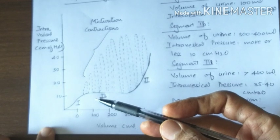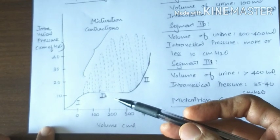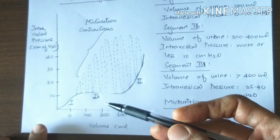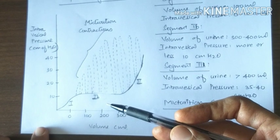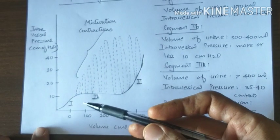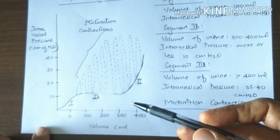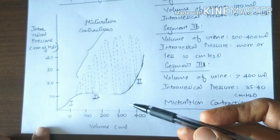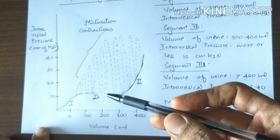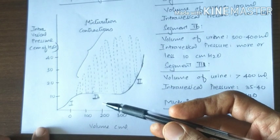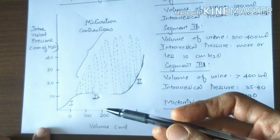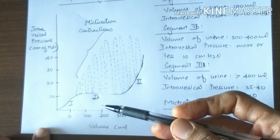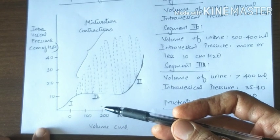Segment 1b shows a plateau part. Here, volume of fluid in the bladder increases from 100 ml to about 300 to 400 ml, but the pressure remains just above or below 10 cm of water. That is because of the property of plasticity as well as Laplace law.